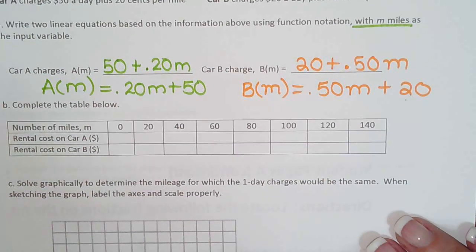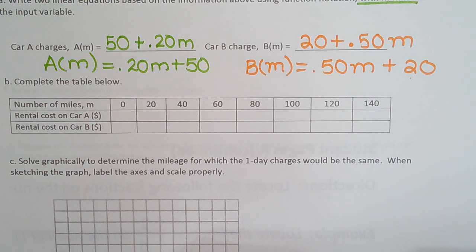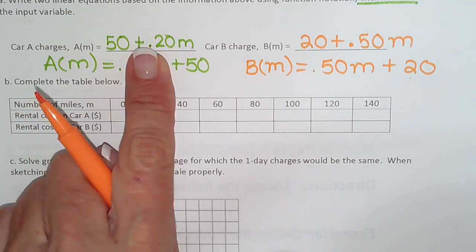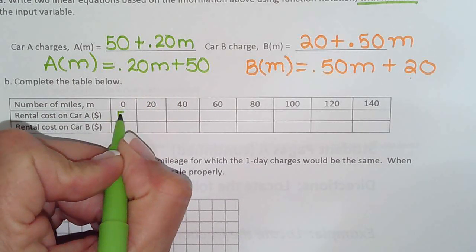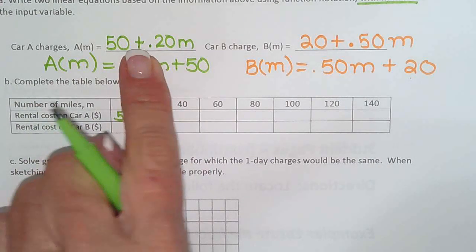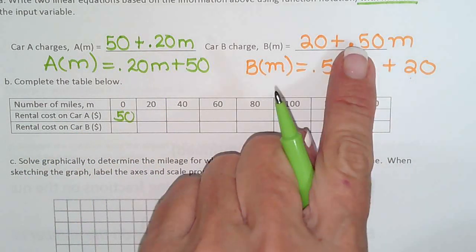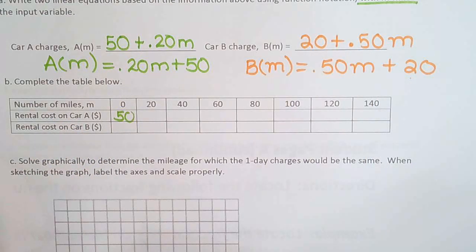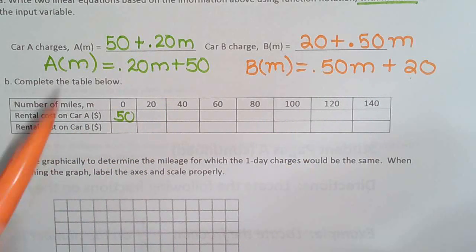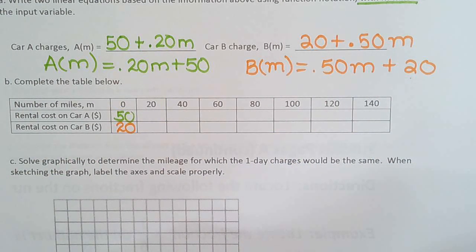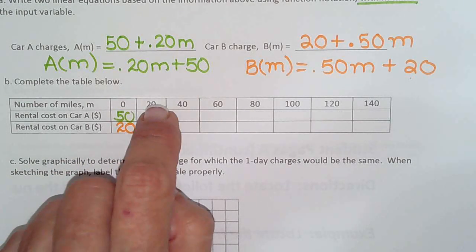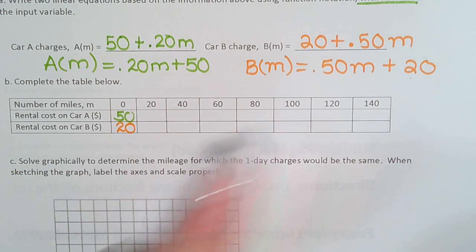So now they're having us complete the table. So we can do the 0 one. So 20 times 0 is 0, so 0 plus 50. So that one's going to cost $50 when you drive 0 miles because $50 is the base fee. So $50 for 0 miles. This one, when you put 0 in, you can see you pay $20 for 0 miles. So let's go ahead and do the pattern. Is this in order? $20, $40, $60, $80? Yep, so they go by 20s.